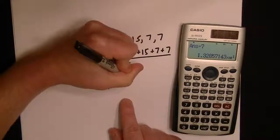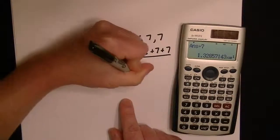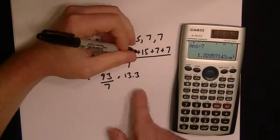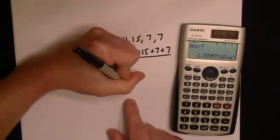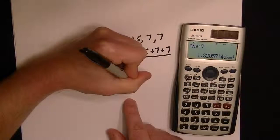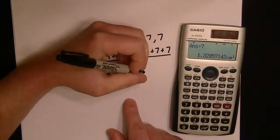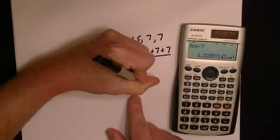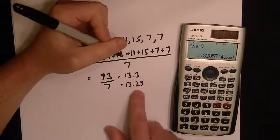That gives us 13.3, so that is the mean. On the calculator, if you want more decimals, it's 13.285. You can round from 285 to 29, so 13.29 or 13.3—they're both approximately the same.